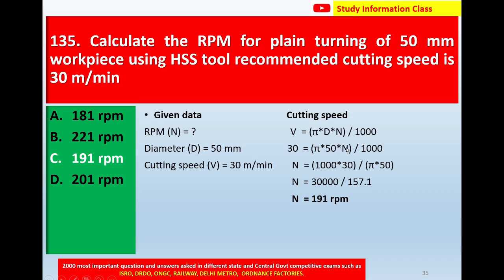Simplifying: N = 30,000 / (π × 50) = 30,000 / 157.1 = 191 rpm. For question number 135, the correct answer is option C: 191 rpm.